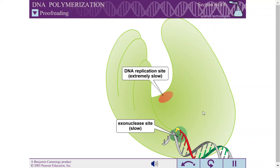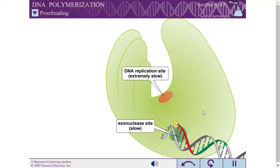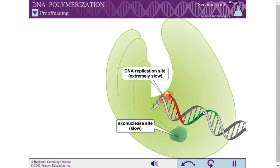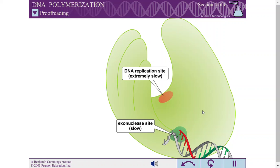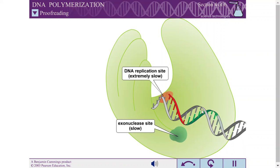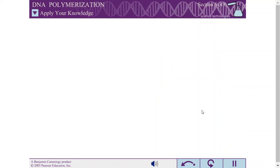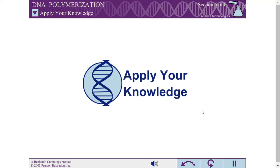The exonuclease site removes incorrectly base-paired nucleotides starting from a three-prime DNA end, and is therefore called a proofreading exonuclease. With a mismatched base, the diminished replication rate is now slower than the exonuclease rate, and therefore excision of the mismatched base is greatly favored over polymerization on top of the mismatch. After this potential mutation is corrected, the primer-template junction slides back into the DNA polymerase site and replication continues.